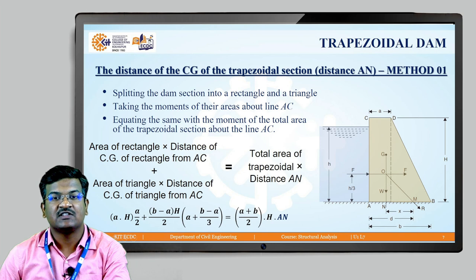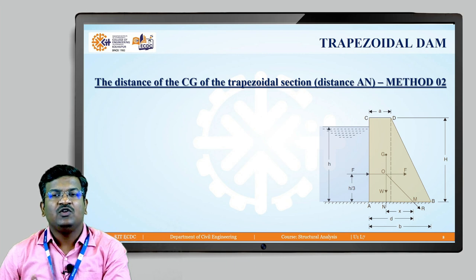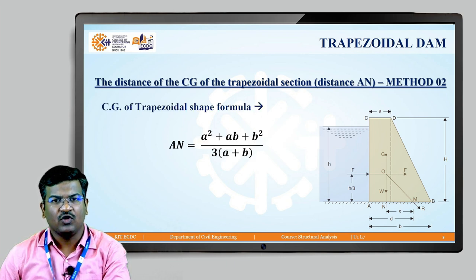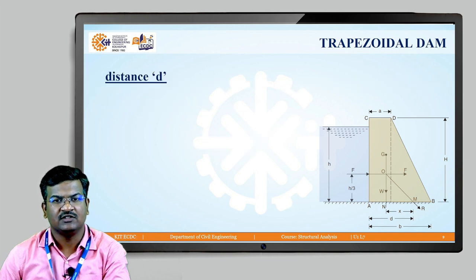Using Method 1 gives the AN distance. For Method 2, use the direct formula: AN = (a² + ab + b²) / (3(a + b)), where a is the top width and b is the bottom width.